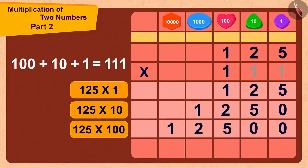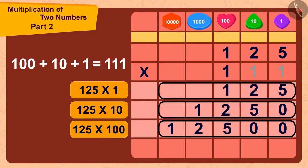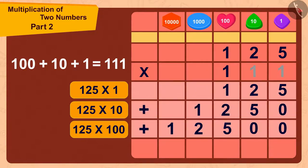Now, by adding these three numbers, in the end, we get the answer to a multiplication 125 times 111 as 13,875.